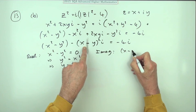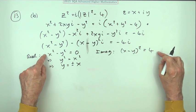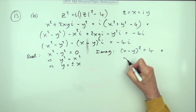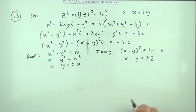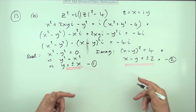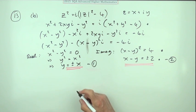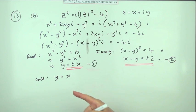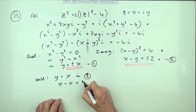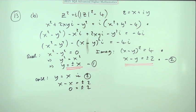Separating real and imaginary parts: real parts give x squared minus y squared = 0, so y squared = x squared, meaning y = ±x. Imaginary parts give (x − y)² = 4, so x minus y = ±2. There's a mark just for that initial equating of real and imaginary parts, and the next mark is for obtaining these two equations.